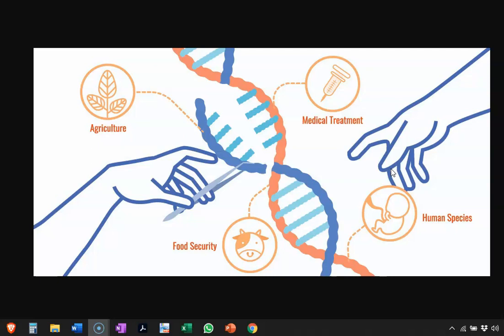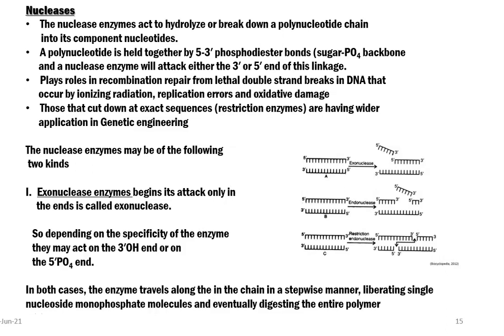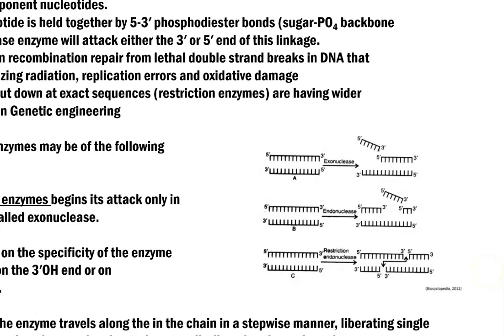Restriction enzymes are used mainly to manipulate the DNA molecule — cutting specific sequences to insert a particular gene and get it transformed — with wider applications in agriculture, food security, and medical treatment. Nucleases are further grouped into two types based on the position at which they act: exonucleases and endonucleases. Exo means acting on the outside regions of a polynucleotide chain — they act at the ends of the chain, as shown in the diagram on the right side of the slide.